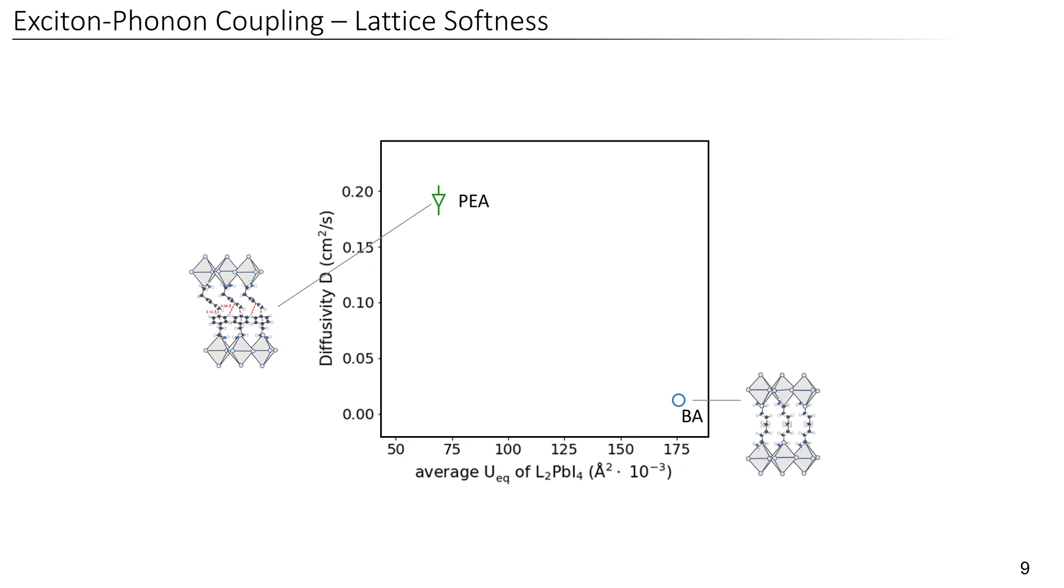Intuitively, it also makes sense that the atoms in phenethylammonium lead iodide perovskites move less, as the phenethylammonium is a bigger and bulkier molecule that makes the crystal lattice overall more rigid, as compared to the small and tiny butylammonium molecule.